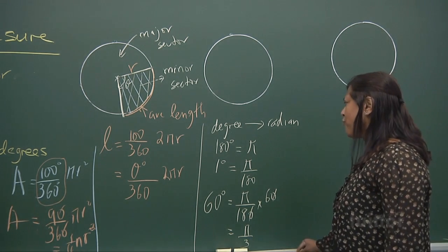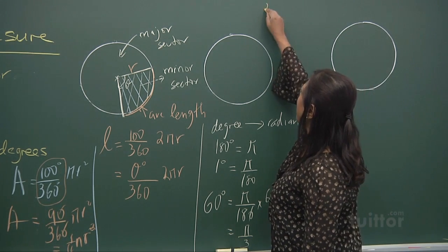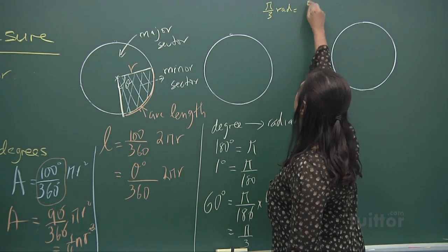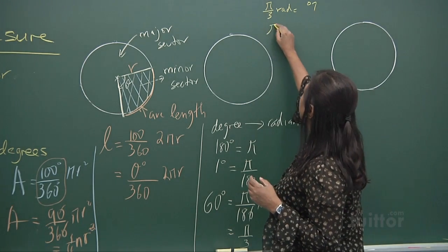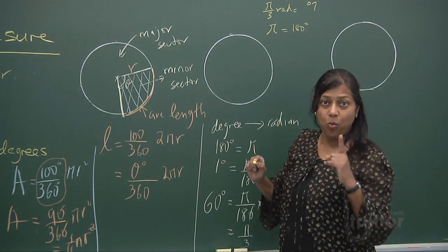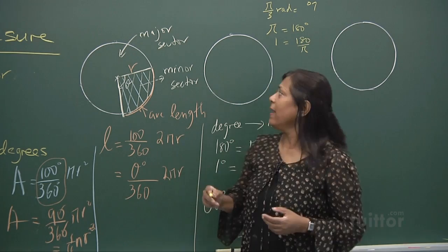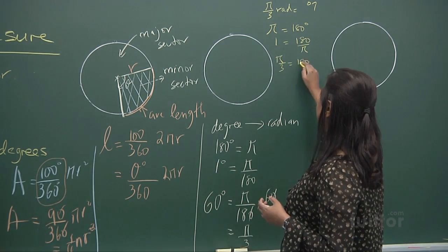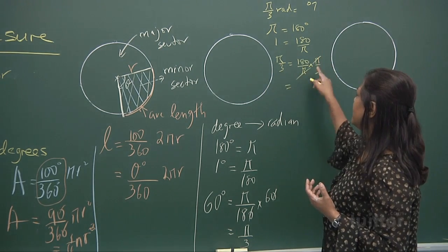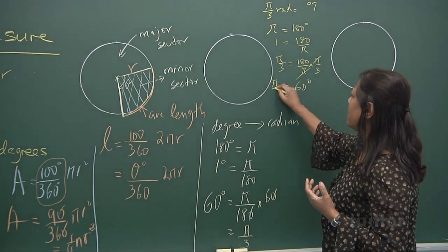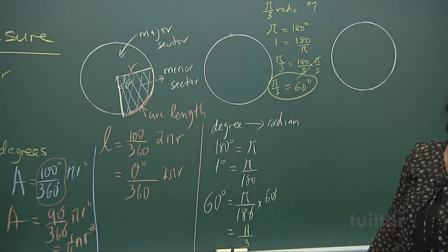Similarly, if we convert from radians to degrees, we do the same thing. If I have π over 3 radians, how many degrees is that? We start from: π equals 180 degrees, so one radian equals 180 over π degrees. Then multiply by π over 3 and cancel — you get 60 degrees. So π over 3 radians equals 60 degrees. This is really important for circular measure.